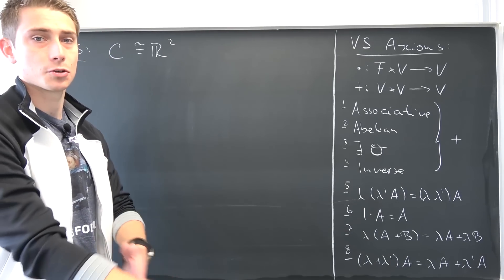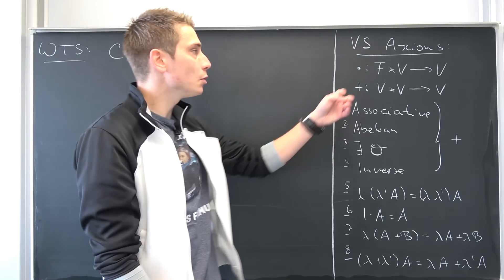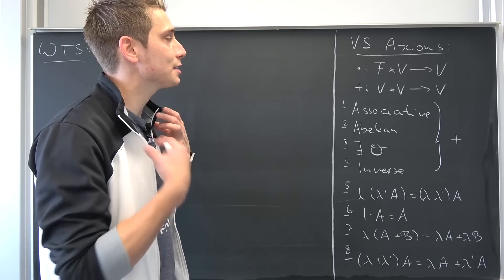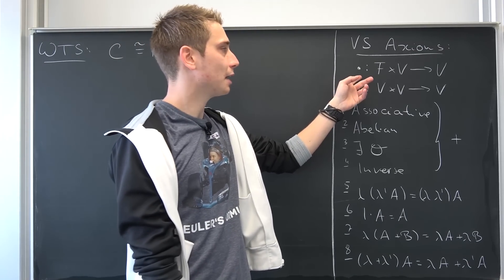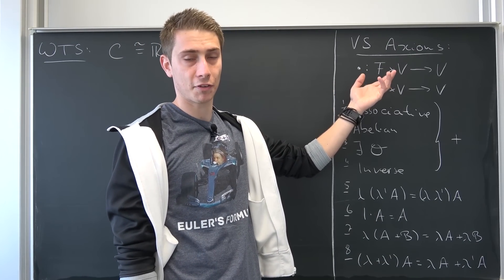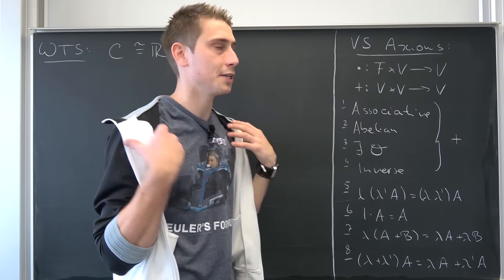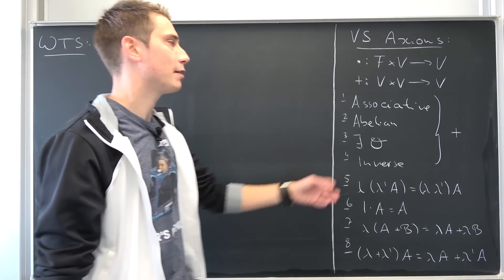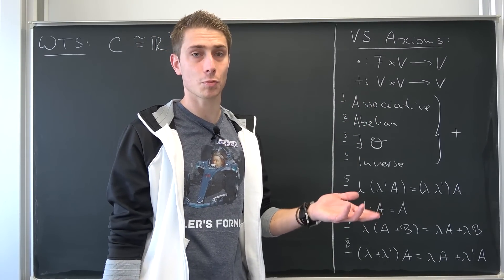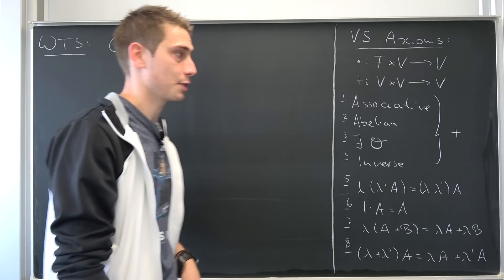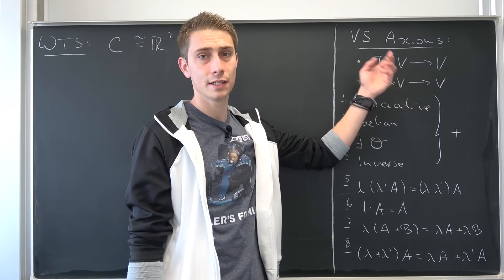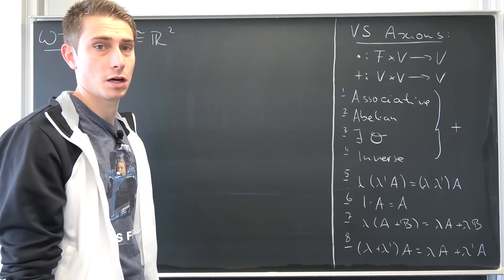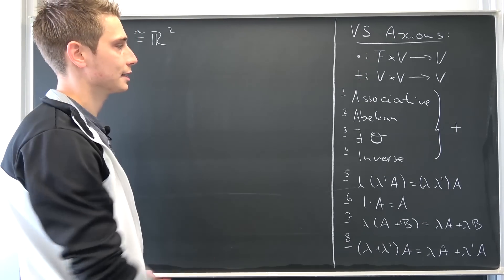We have two operations: multiplication and addition. Our scalar multiplication is defined as a scalar multiplied by a matrix, in the case of our C. Our addition is defined pointwise — it's just a matrix plus another matrix, mapping V × V back to our vector space C.